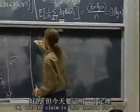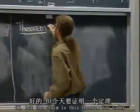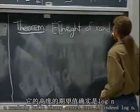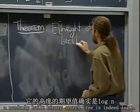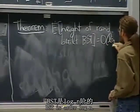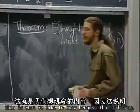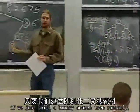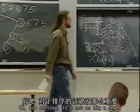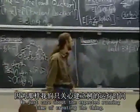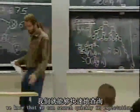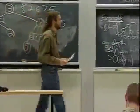The theorem for today is that the expected height of a randomly built binary search tree is order log n. This tells us that if we build a binary search tree randomly, we can search in it in log n time in expectation. The rest of today's lecture will be proving this theorem — it's quite tricky, another big probability analysis along the lines of quicksort.